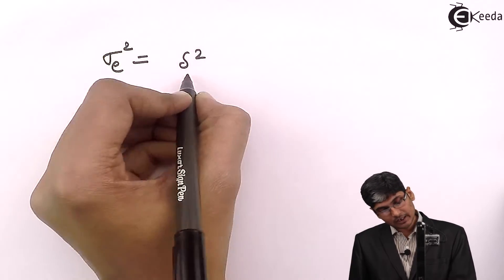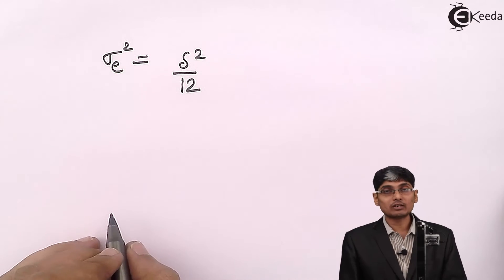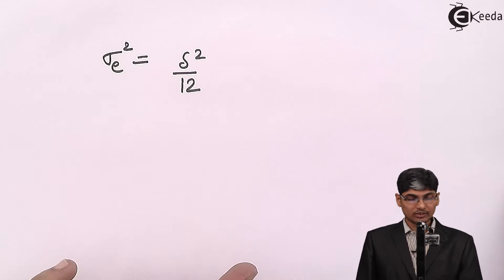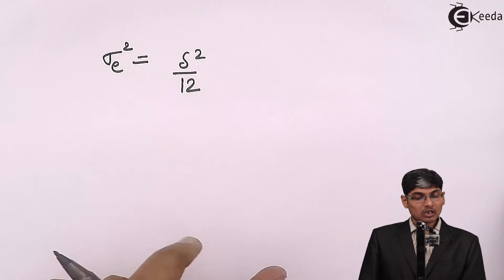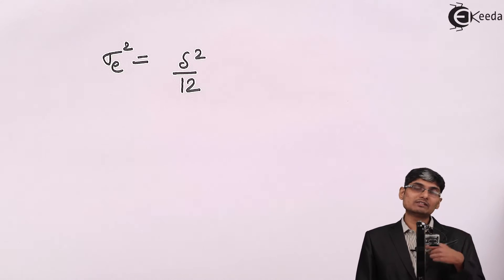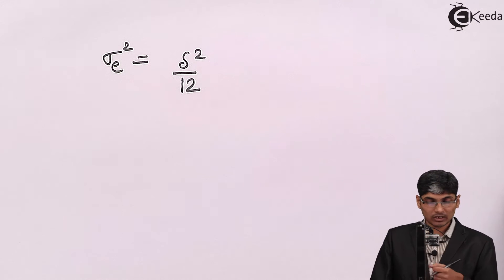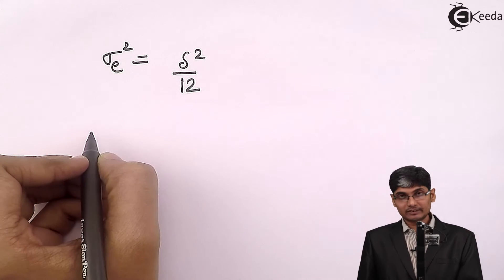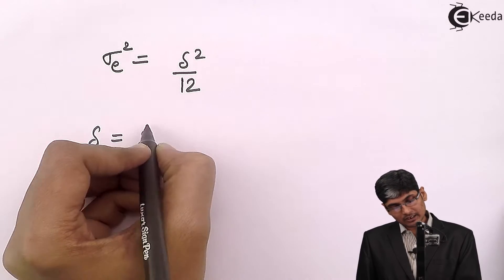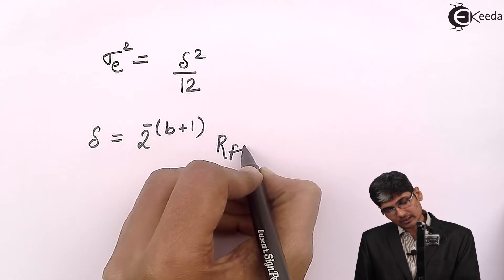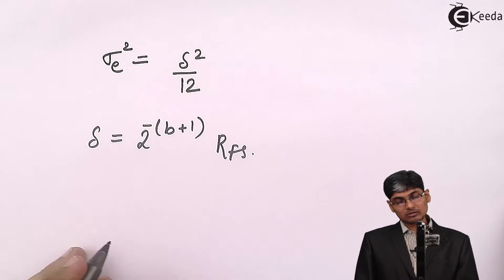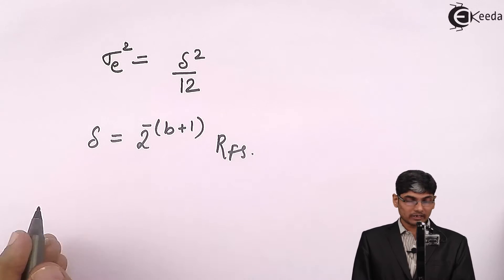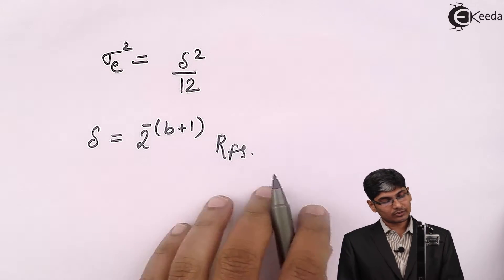The variance sigma_e² equals delta²/12. If you want to know how this value is derived, you can visit the video on A to D conversion noise. Here we will directly use this result derived in the video on quantization noise. We also know that RFS and delta are related, and delta can be written as 2^(-(B+1)) times RFS, because RFS equals 2·delta·2^(B+1).